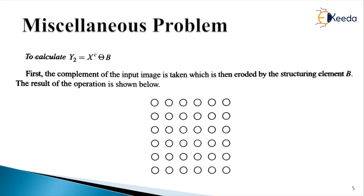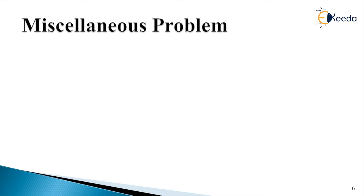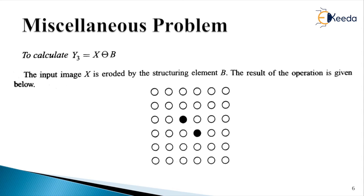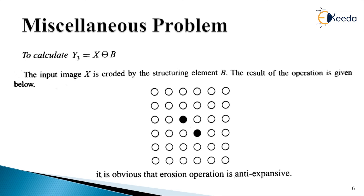Part four requires calculating Y3, obtained by eroding the input binary image X by structuring element B. The result of the erosion operation is that we have only two pixels with dark color whereas all the rest are white. As we know, erosion is the opposite procedure to dilation. In dilation we observed expansion of the image object, whereas shrinkening occurs in the erosion operation. We can also term the erosion operation as anti-expansive or compressive.